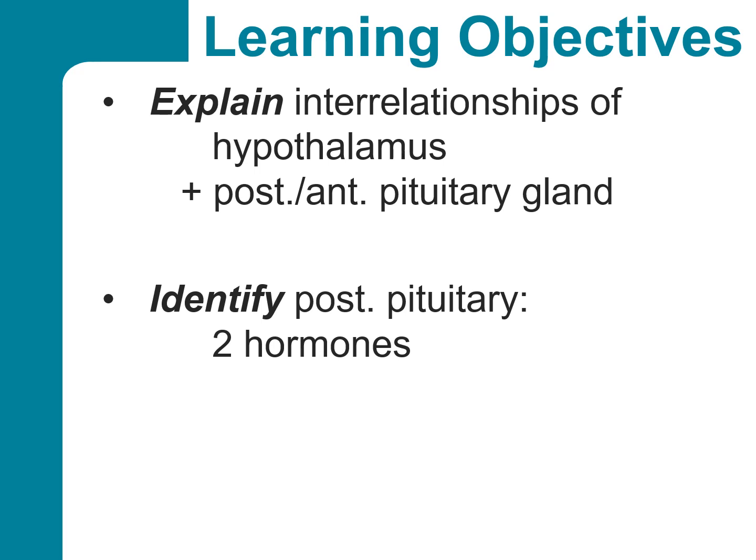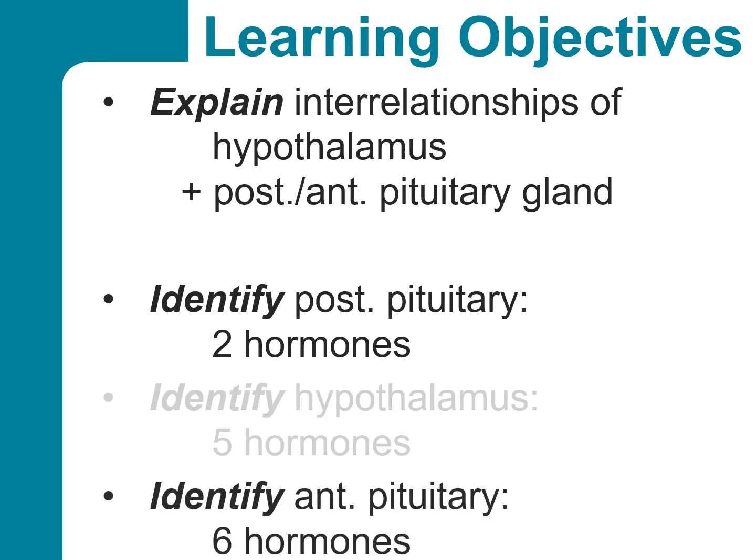For the posterior lobe of the pituitary gland, we want to identify two hormones that are released from here — what they are and their main functions. For the anterior pituitary, we want to identify six different hormones, what they target, their main actions, and how they are regulated. To understand their regulation, we also need to look at five different hypothalamic hormones that control those of the anterior pituitary.